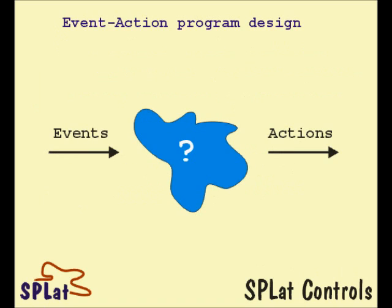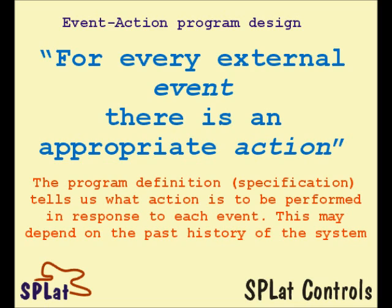A typical event action program for a machine takes in events from the outside world. It massages this according to a certain set of rules, and as an output it produces certain actions that influence the behavior of the machine. So for every external event, the program has to generate an appropriate action. It's the program definition or specification that tells us what action is to be performed in response to each possible event, which may also depend on the past history of the system.